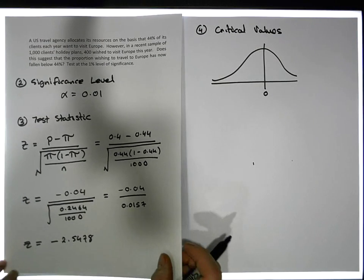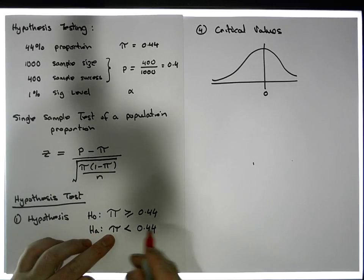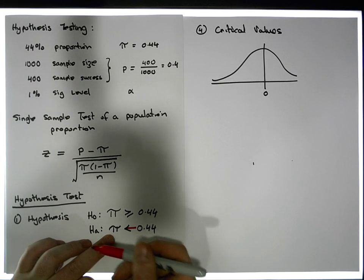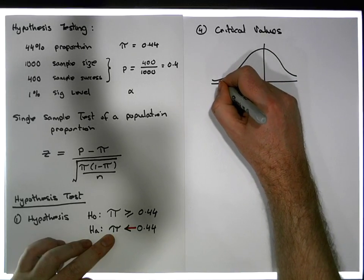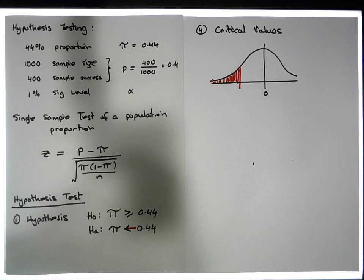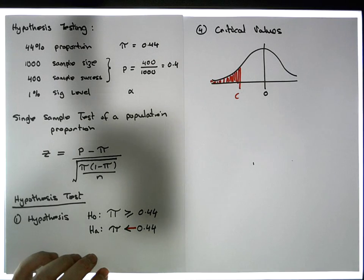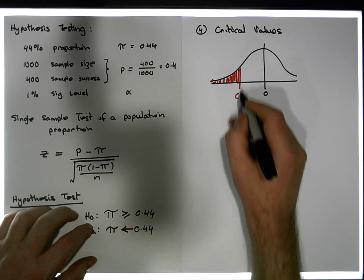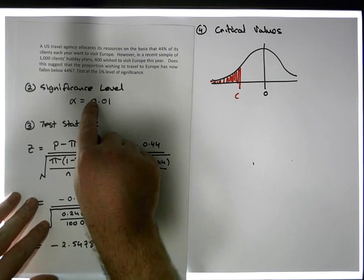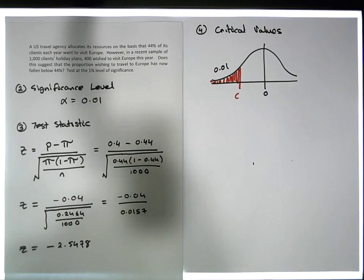Going back to our alternative hypothesis — the population parameter is less than 0.44, so the arrow points to the left. To show it's less than 0.44, the test statistic needs to fall in the left-hand region of the curve. The critical value needs 0.01 of the area under the curve to its left.